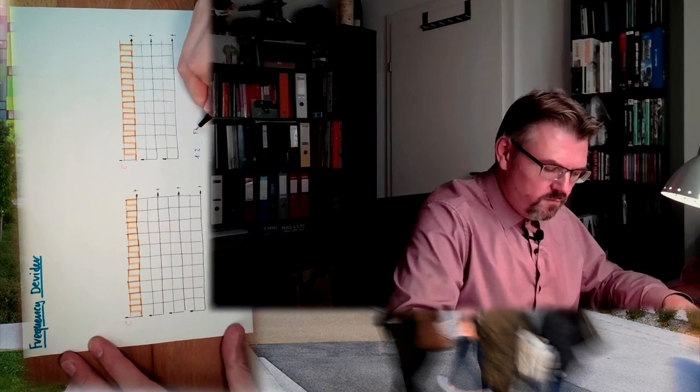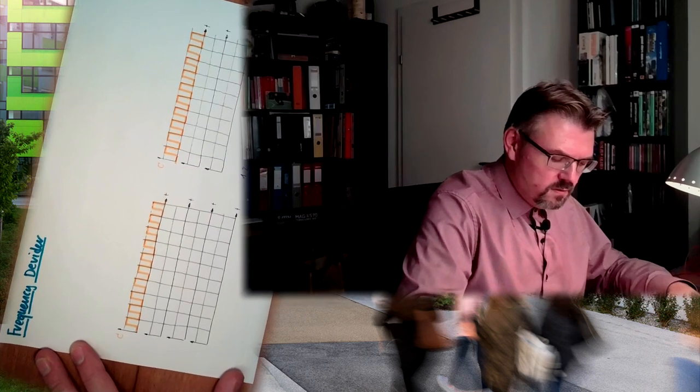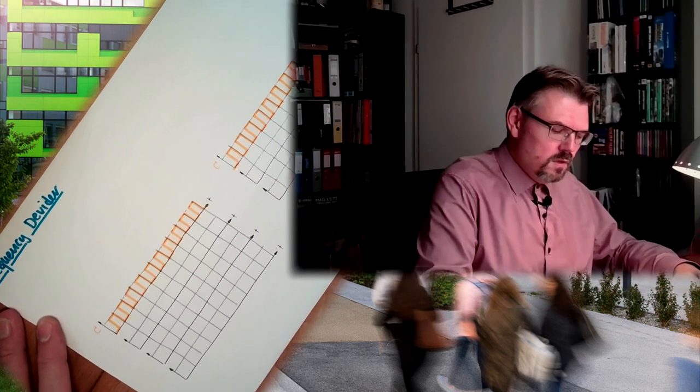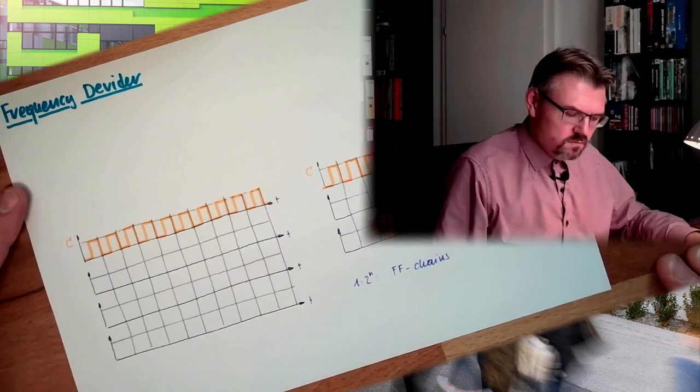What ratios, what frequency ratios we could reach? We noticed immediately half. A ratio of 1 to 2 is no issue. So if we want to have a ratio of 1 to 2, we just need flip-flops, flip-flop chains. Even 2 raised by the power of something, then I need n flip-flops, right?